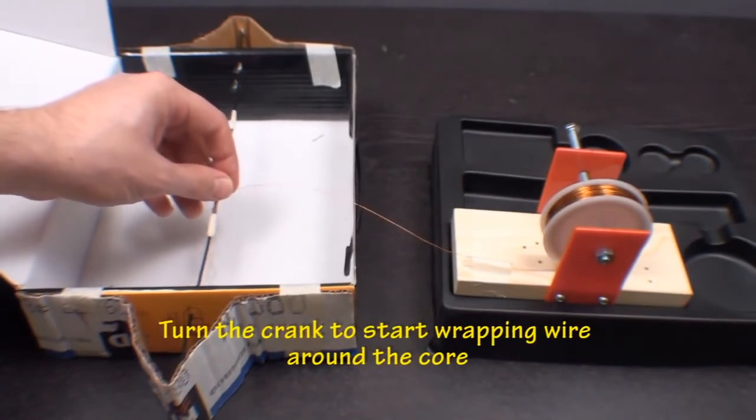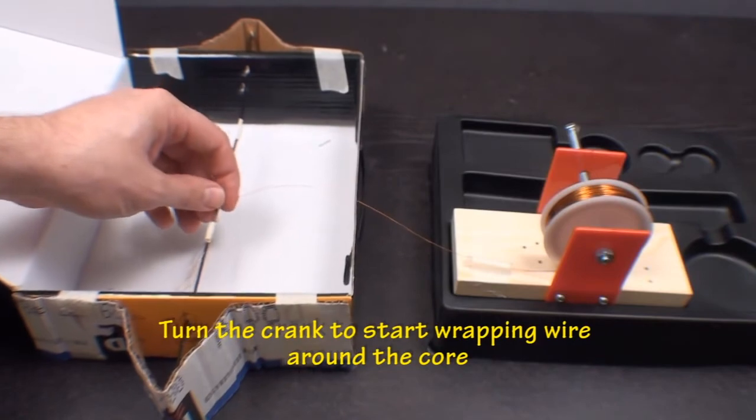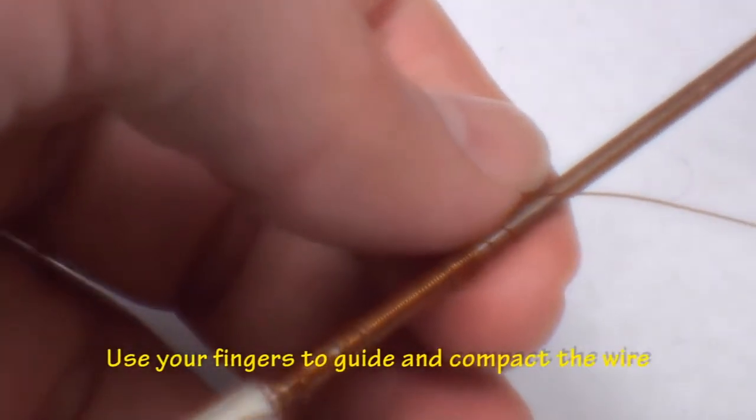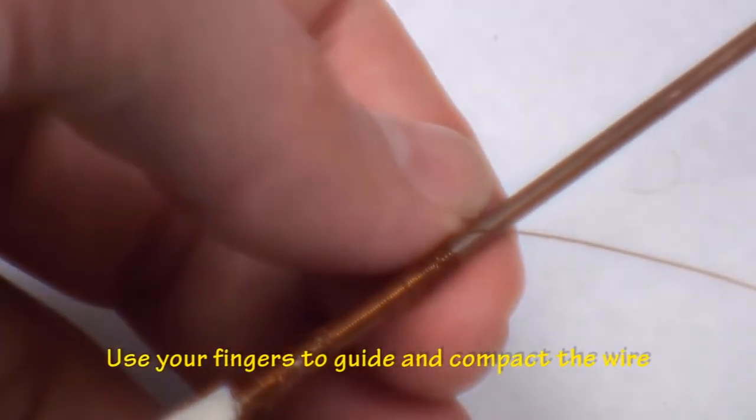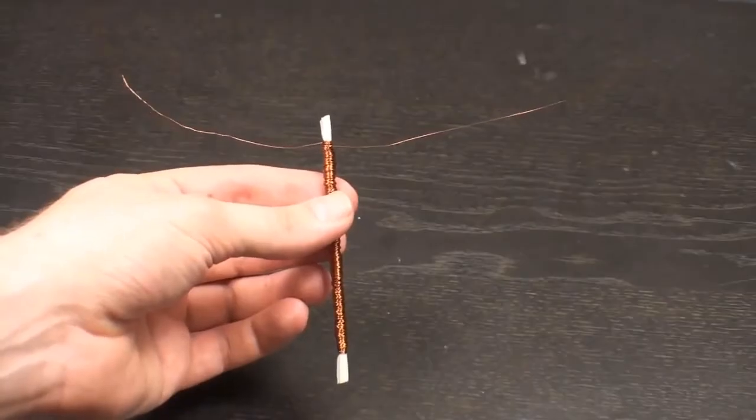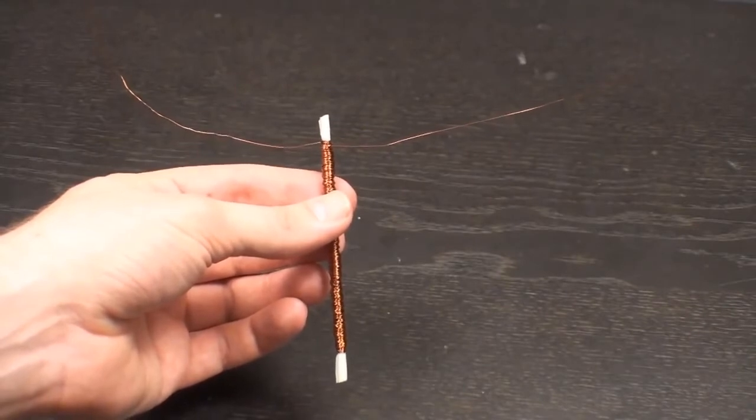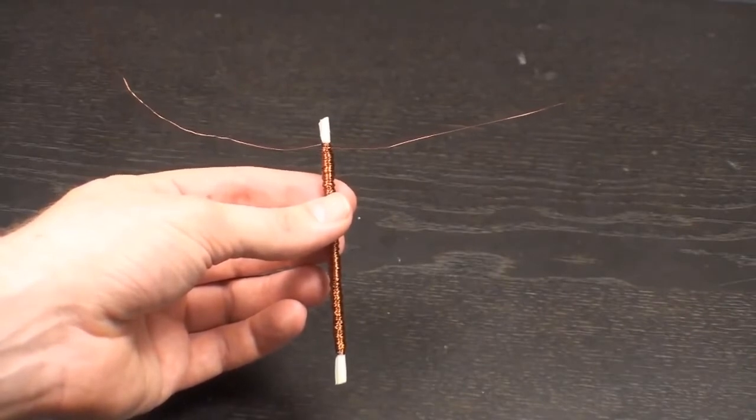Start turning the crank and winding the wire around the core slowly. Use your fingers to guide the wire. When you finish, you should have two leads coming off the same end of the core.